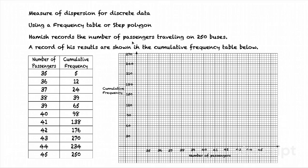Hamish records the number of passengers travelling on 250 buses. A record of his results are shown in the cumulative frequency table. Here's our cumulative frequency table. We have the number of passengers in the first column and the cumulative frequency in the second column. Do be sure to make note that this is cumulative frequency. Cumulative meaning adding on each time.